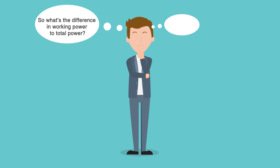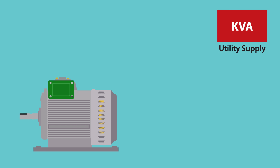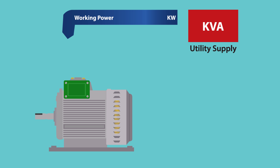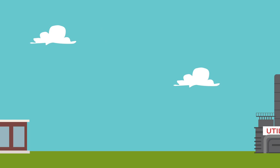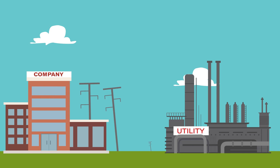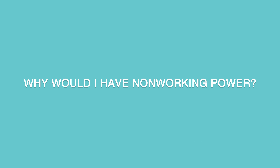So what's the difference between working power and total power — aren't they the same? The difference between working power and total power is called reactive power, or kVAR. Reactive power is the non-working power delivered to a facility.